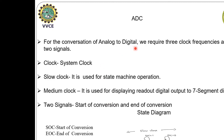For the conversion of analog to digital, we require 3 clock frequencies and 2 signals. The first one is a system clock. The second one is a slow clock, which is used for state machine operation. The third is a medium clock, used for displaying the read-out digital output on a 7-segment display. We are using a 7-segment display here. The two signals are start of conversion and end of conversion.